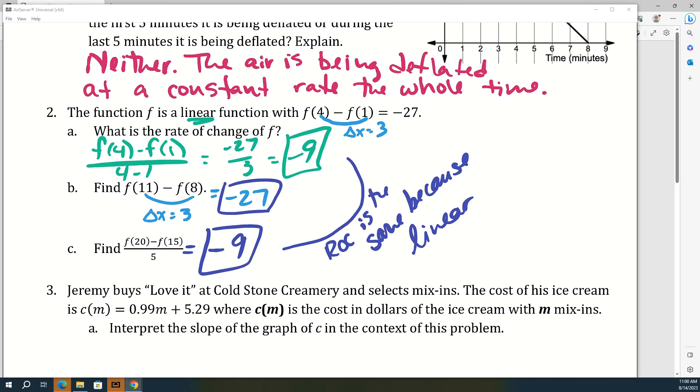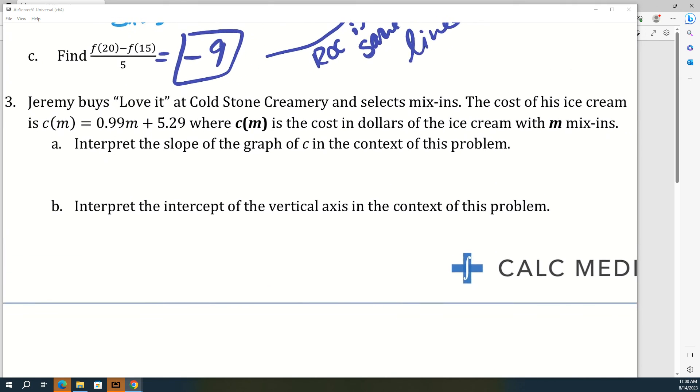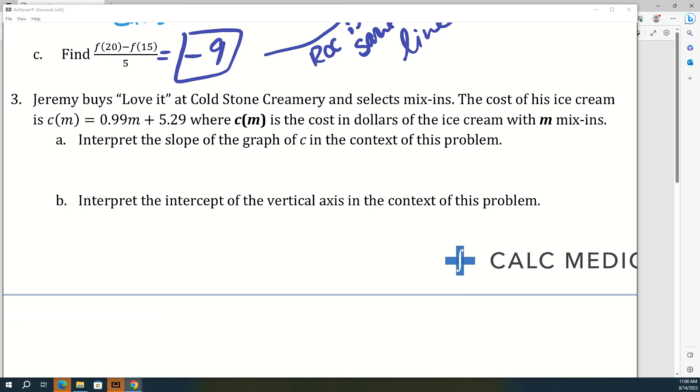In this case, sometimes the contextual problems are more difficult because there's like lots of real life things going on. In this case, I think the contextual problems are easier to do than the abstract problem. Okay, we have one more example and it's about Cold Stone Creamery. You guys been to Cold Stone Creamery before, or Marble Slab or Maggie Moo's? They're all kind of the same—you get like a base ice cream and then you can get mix-ins. So Jeremy buys Love It, which I assume is a type of ice cream at Cold Stone Creamery and selects mix-ins. The cost of his ice cream is given by that function where c(m) is the cost in dollars of the ice cream with m mix-ins. So a asks us to interpret the slope of the graph of c in the context of this problem. So what is the slope here, like what numerical value? Right, 0.99. And what does that mean for this problem with ice cream and mix-ins?